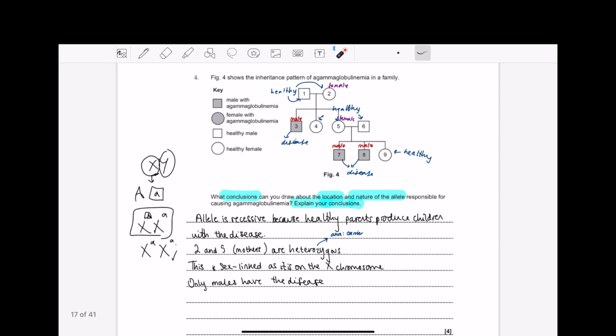So then I said this is sex-linked as it's on the X chromosome, and only males have the disease. That's it. Literally, it's so simple. Easy four marks. But it's just like, how do I do it? Well, first, analyze the family tree that they've given you. Annotate it however it makes you best understand it. This is how I best understand it. You might differ. And then literally, I want you to be so obvious.